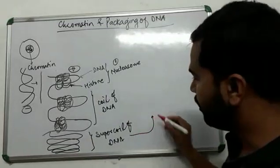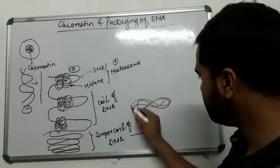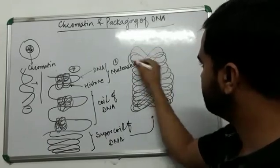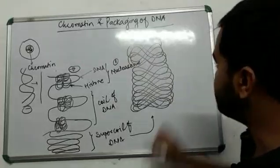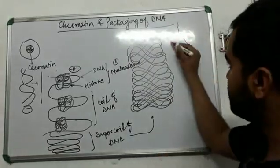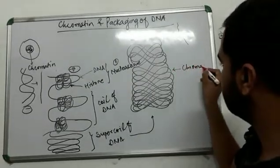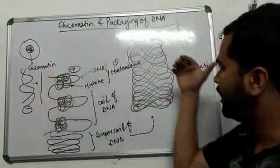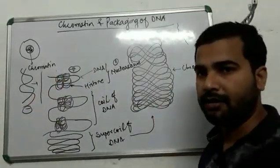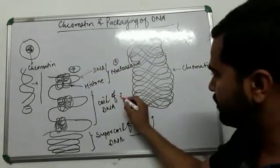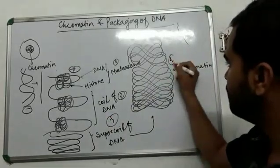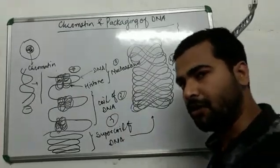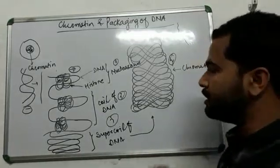What is to be done next? This super coil of DNA will further become very packed. This repetition will be continued and you will be able to observe a structure. Further packaging and further condensation of this super coil of DNA will take place and it will appear like this thread — and this structure is called chromatin. So we began from DNA, packed the entire length of DNA, and now it appears as chromatin. How many steps? The first step is nucleosome, coil of DNA is the second step, super coil of DNA is the third step, and chromatin formation is the fourth step.